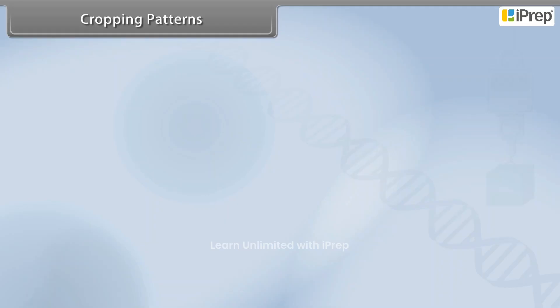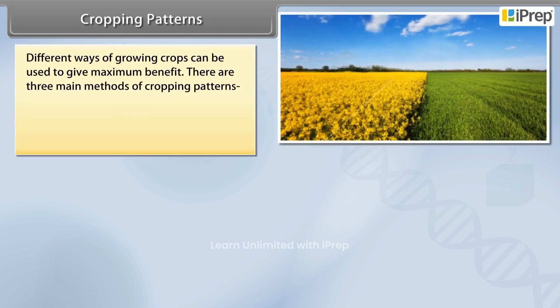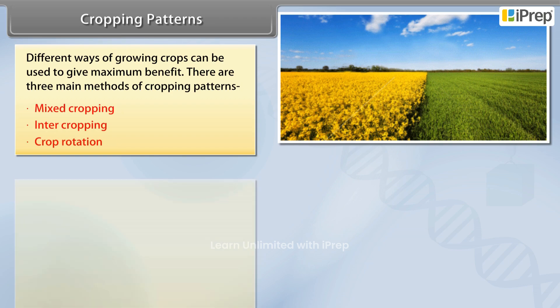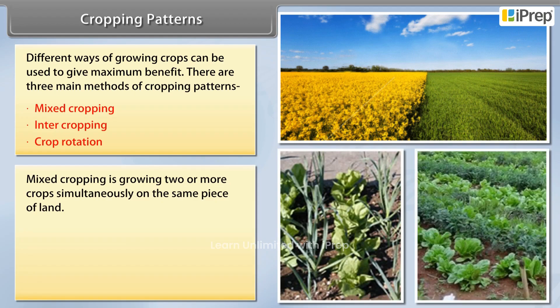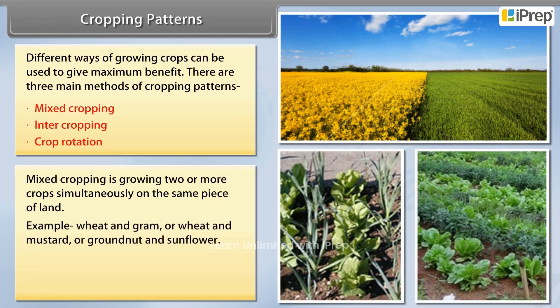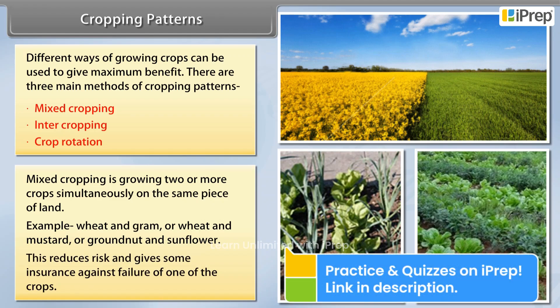Cropping patterns — different ways of growing crops — can be used to give maximum benefit. There are three main methods of cropping patterns: mixed cropping, intercropping, and crop rotation. Mixed cropping is growing two or more crops simultaneously on the same piece of land. Examples include wheat and gram, wheat and mustard, or groundnut and sunflower.